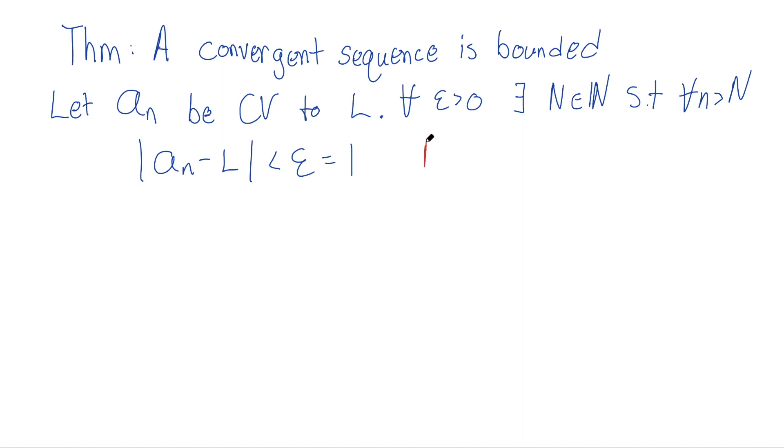And I'm going to say that we have one bound, I'll call it b1. We're going to call b1 the absolute value of L, the absolute value of the limit, plus one. This is the trick here. And then what do we have?